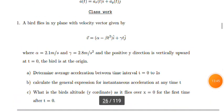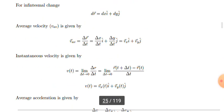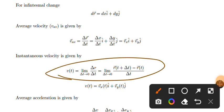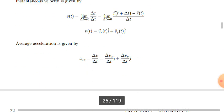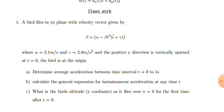Average velocity is given by change in displacement over change in time: change in r over change in t equals change in x over change in t times i plus change in y over change in t times j. Instantaneous velocity v(t) is the limit as change in t approaches zero of change in r over change in t, which equals v_x(t) i plus v_y(t) j.